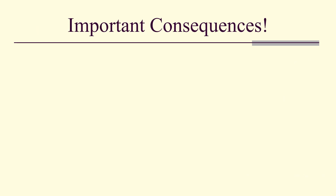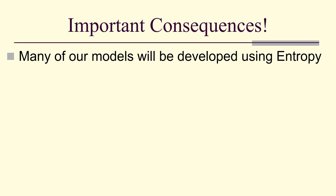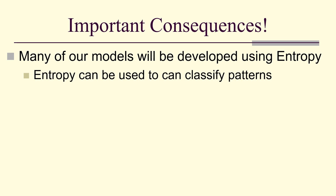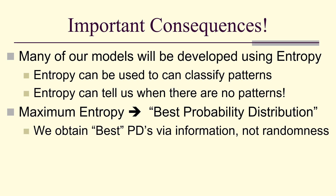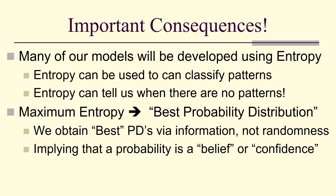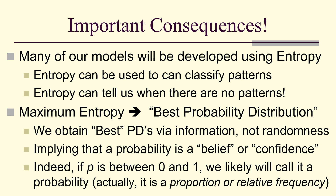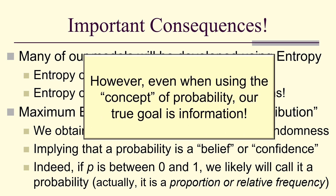This has important consequences. Many of our models will be developed using entropy. Entropy can be used to classify patterns and even tell us when there are no patterns. Maximum entropy gives us our best probability distribution, obtained via information — not randomness — implying that probability is better thought of as a Bayesian belief or confidence. Any number between 0 and 1 we encounter we'll call a probability, even if it's a proportion or relative frequency. But keep in mind our true goal in context is information.